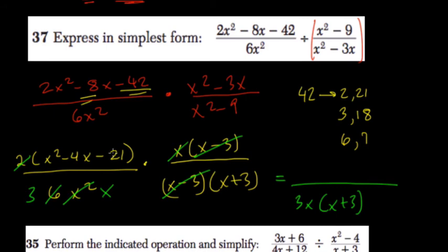Factors of -21 that add to -4. Well, I know that -7 times positive 3 is -21, and if we add them we get -4. So we can say (x - 7)(x + 3). Notice, the (x + 3)s cancel out.